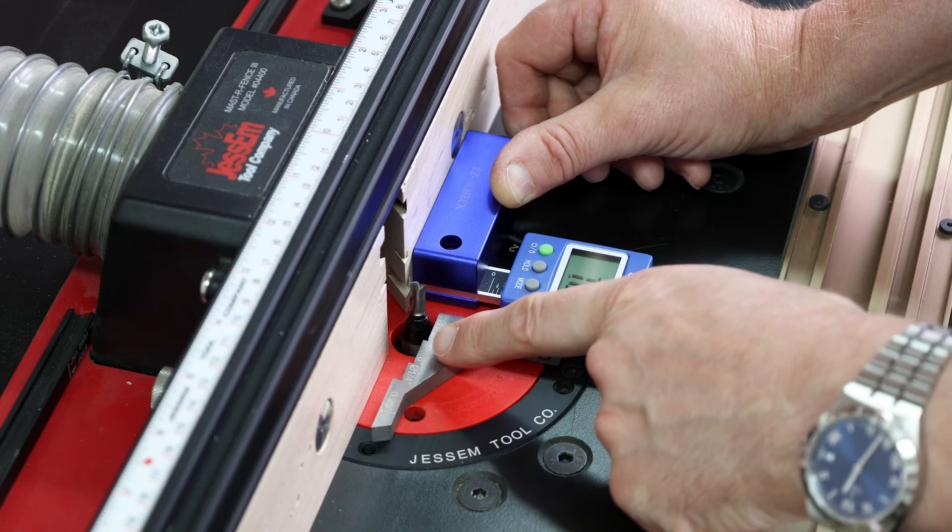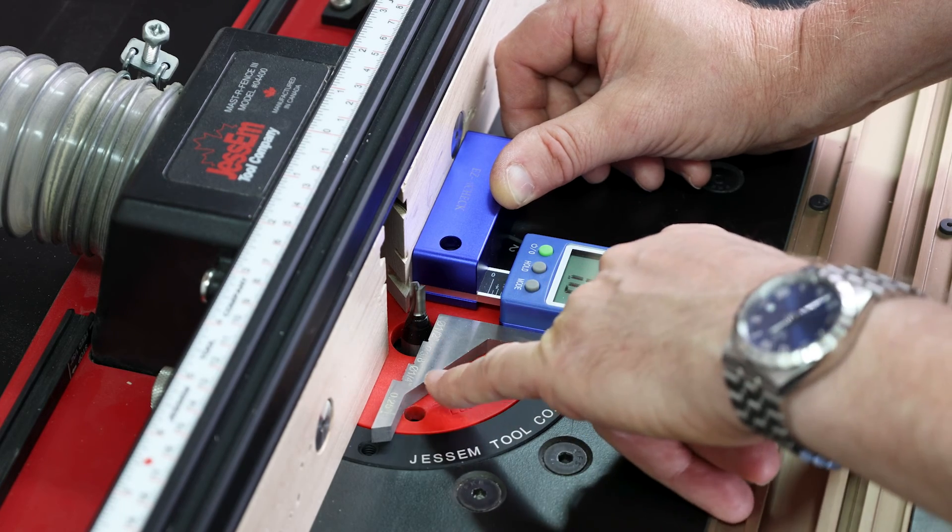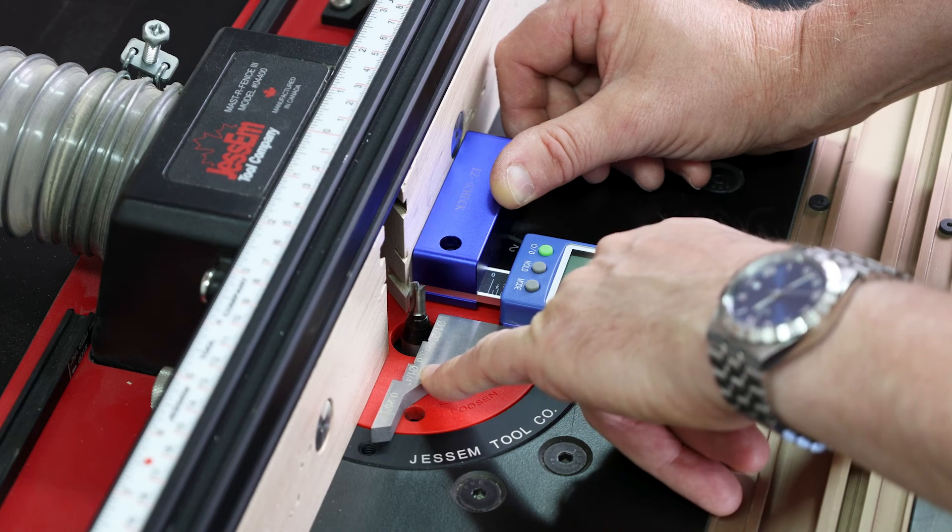If you had a three-eighths of an inch shanked cutter, you'd come against the step here. Whereas if it was a more usual quarter-inch shanked cutter, you would bring the shank up against the quarter-inch positioning.